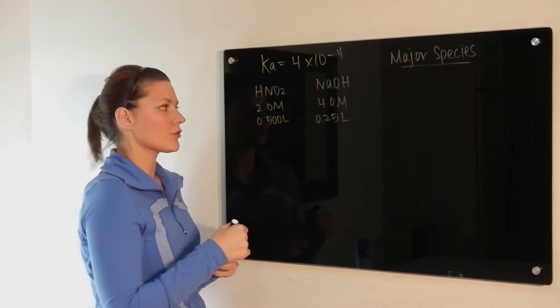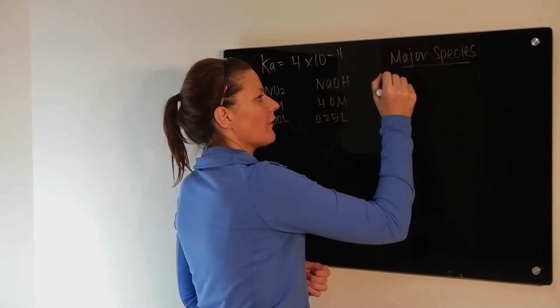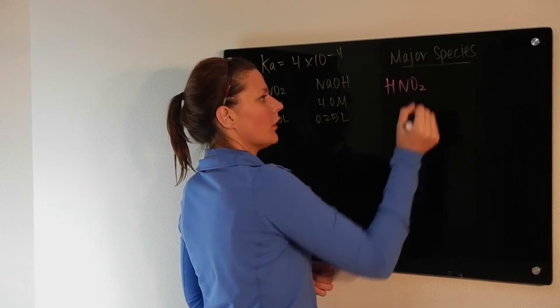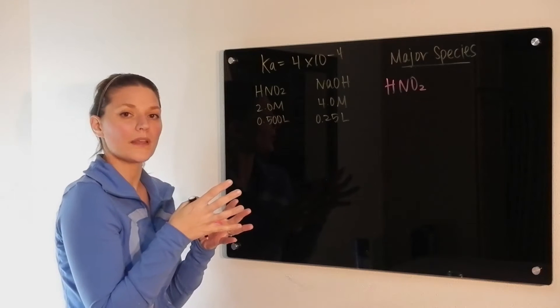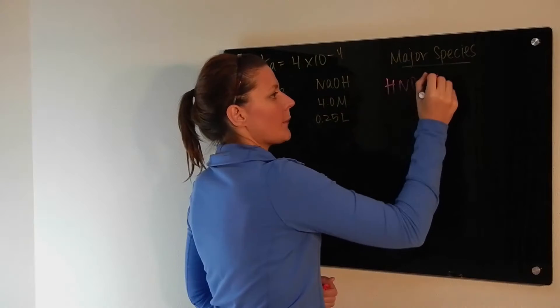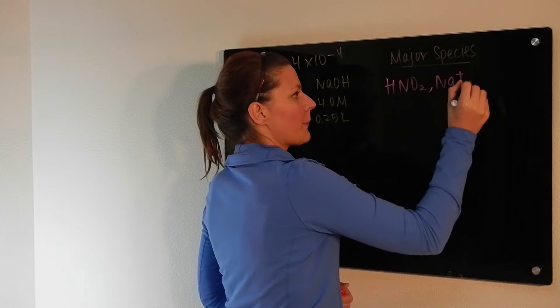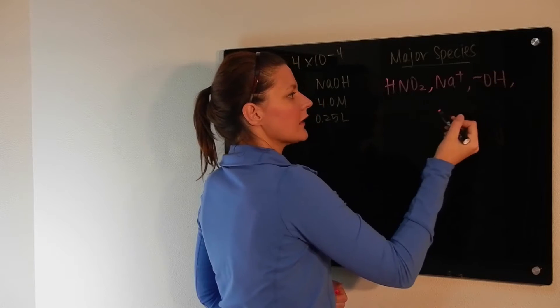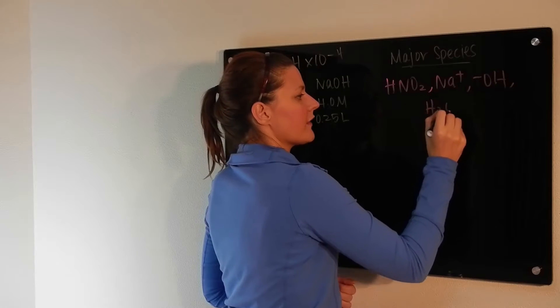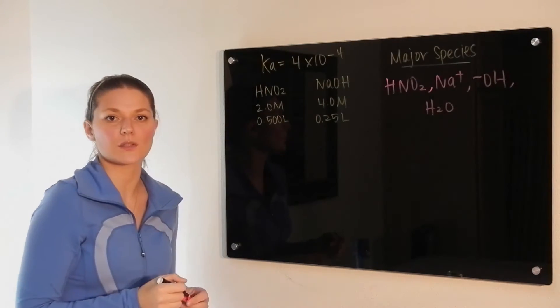So first step, look at your major species. Once again, we have HNO2. Weak acid stays as a whole piece for the most part. Sodium hydroxide is strong, so it would separate into its component ions. And then water is always in there because we're looking at aqueous solutions.